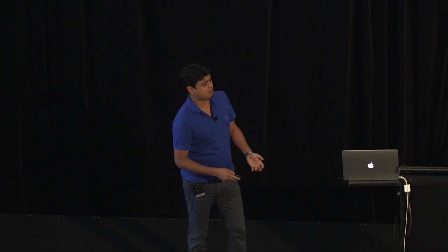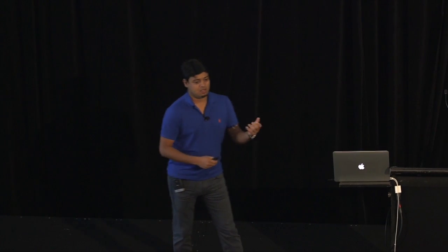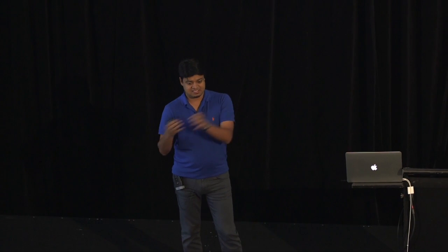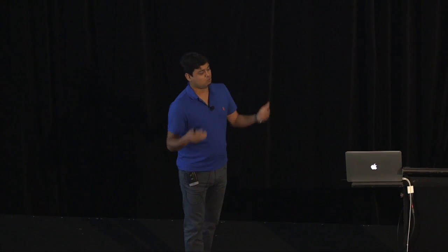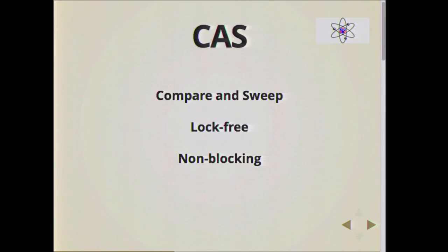The first advanced concurrency model we'll talk about is atoms. At the hardware level, processors nowadays implement something called compare-and-swap, so the operation of getting a value, incrementing, and setting it can be done within one operation by the processor. The lovely folks in Java land created a hierarchy of classes — atomic integer, atomic boolean, atomic long, atomic integer array, atomic boolean array — which use compare-and-swap and are lock-free and non-blocking.